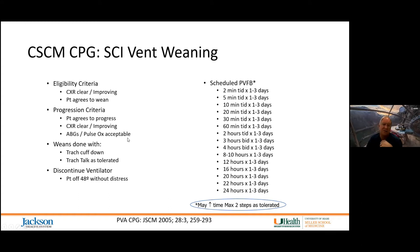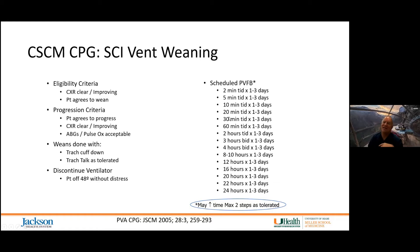The wean is done with the trach cuff down, trach talk as tolerated — two minutes three times a day for the first one to three days, then progressing to five minutes, ten minutes, twenty minutes three times a day, continuing until the person is off a ventilator for at least 48 hours without distress. You can increase the time a maximum of two steps — if the person did very well on two minutes, you might jump to ten minutes three times a day.